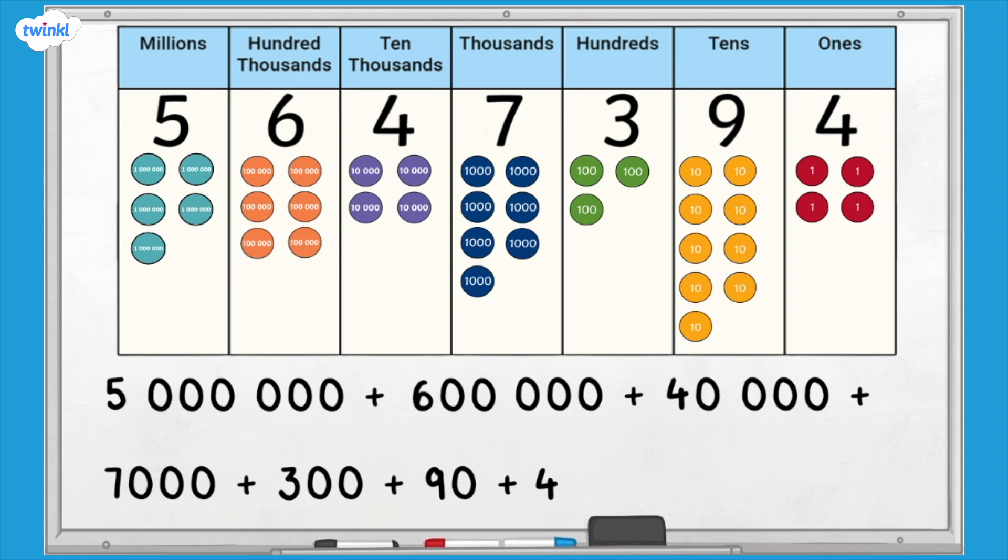This means that the number is 5,647,394. We can partition the number into each of the parts.